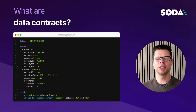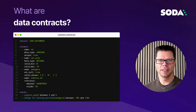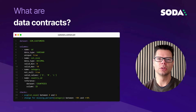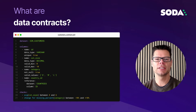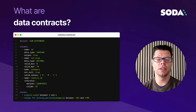In data engineering, the big shift happening today is that data producers are getting better at taking ownership of the data they produce. Data contracts are a tool to help data owners communicate the API for data — expressing exactly what data is available to all consumers, like schema, semantics, update frequency, and data quality guarantees.